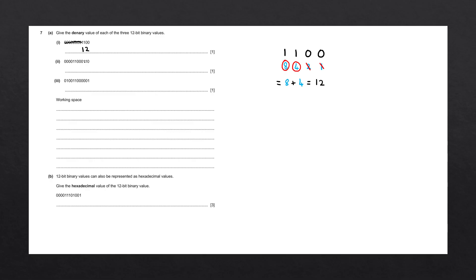For the next number, we do the same thing as we did with the first number — cancel out as many preceding zeros as we can until we reach a 1. Let's start at the least significant bits and write down the bit positions: 1, multiplied by 2 gives 2, then 4, 8, 16, 32, 64, and 128.